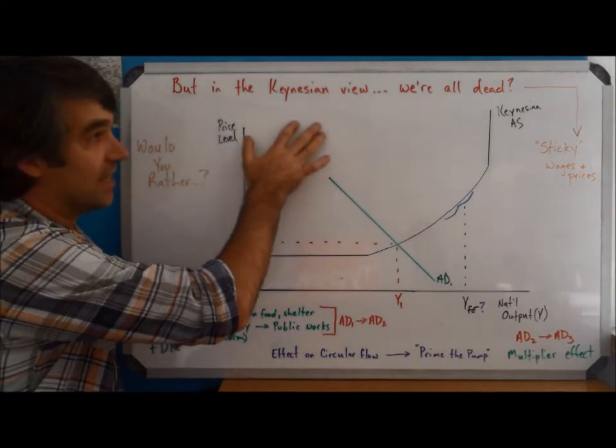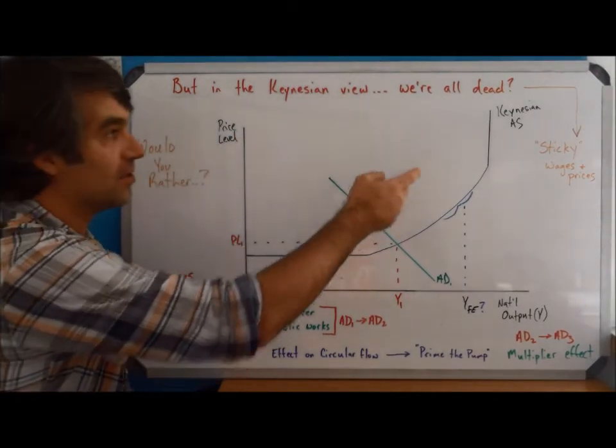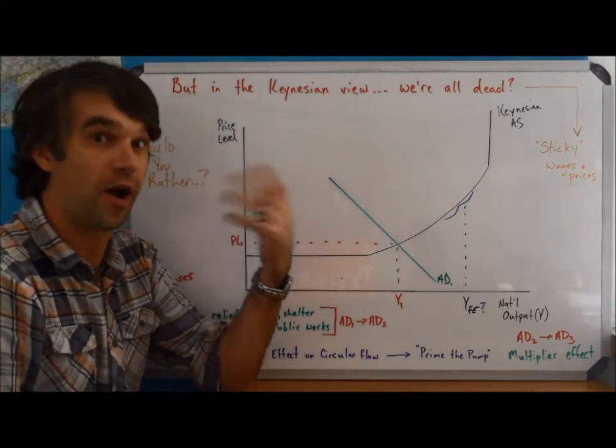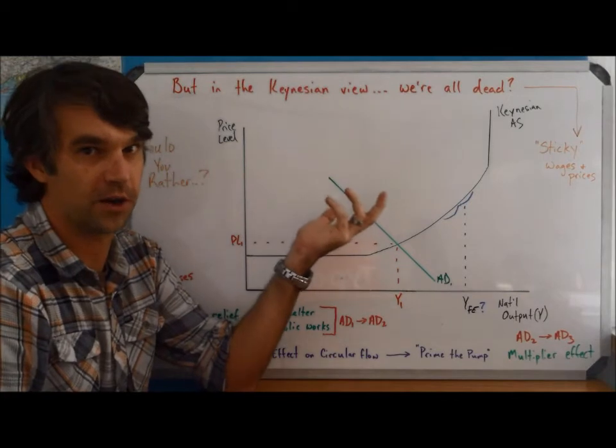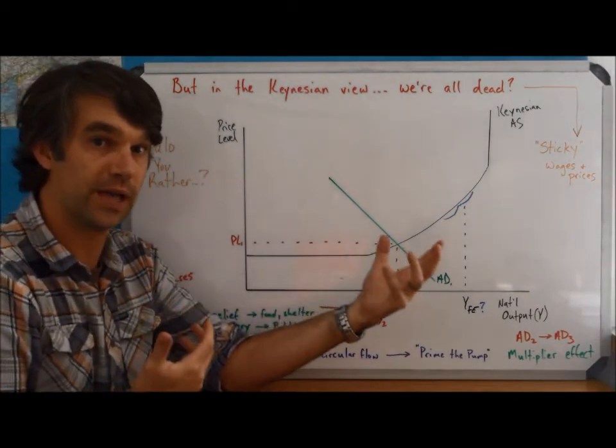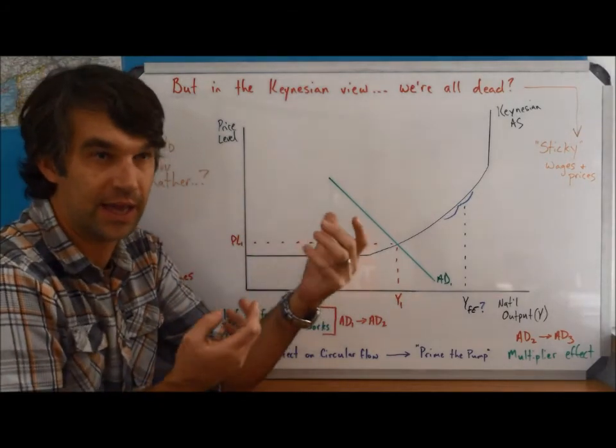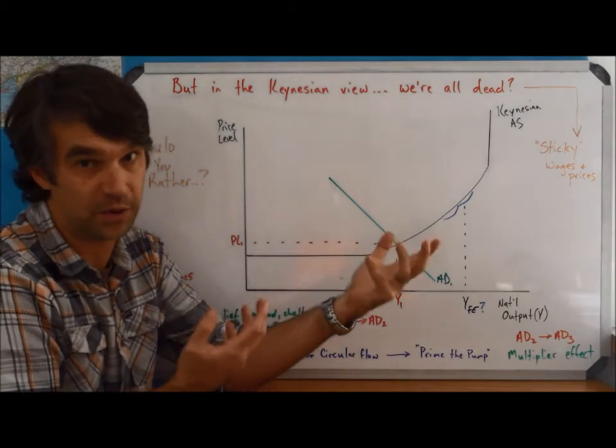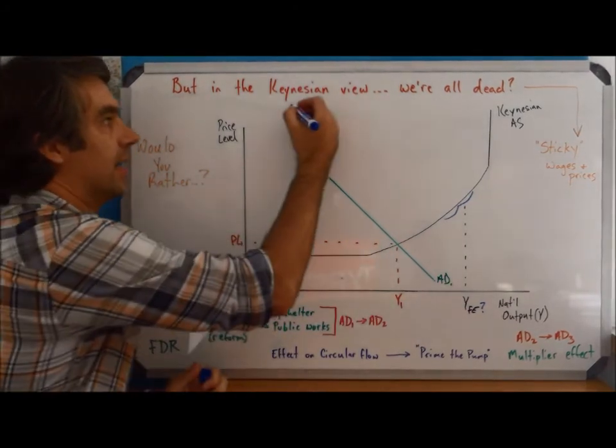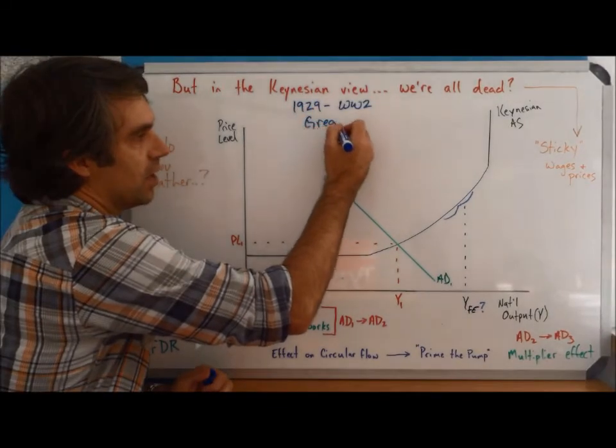But the way the Keynesians see it, before that happens, before all that self-regulation occurs, we'll all be dead. Keep in mind, the Keynesians don't argue that self-regulation won't occur. They argue that because the economy is so big and so complex, that to go through the process of self-regulation is going to take too long and it's going to be too painful of a period. Keep in mind, Keynes is writing in response to the 1929, he's writing in response to the Great Depression.